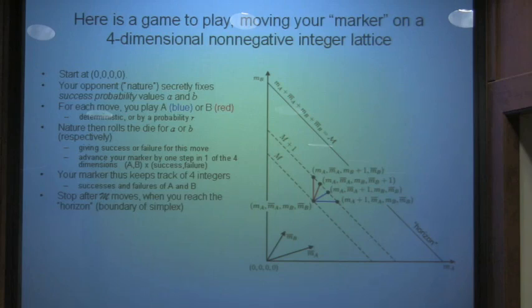We stop at what's called the horizon. The horizon is when the total number of moves, successes plus failures of A plus B, is some predetermined number, like a hundred. But you'll see later, we're going to be interested in like a million. And that, in this four-dimensional lattice is some kind of diagonal hyperplane. When we reach the diagonal hyperplane, we stop, and the game is over, and we see how well we've done.